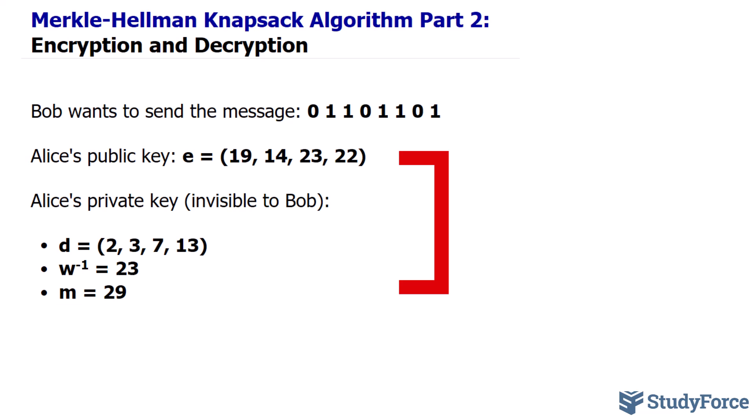Remember that Alice possesses both her public and private keys. Here's how Bob would use Alice's public key to encrypt the message, converting it into ciphertext. First of all, notice that Bob's message consists of 8 bits, or has a length of 8 characters, while Alice's public key consists of 4 terms. In such a situation, the length of the message needs to match the number of terms contained in the public key.